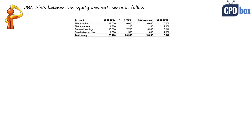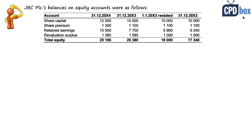Let's take a look at the example. JBC plc's balances on equity accounts are shown in a table with four different dates: year-end of 20x4, year-end of 20x3, 1 January 20x3, and year-end of 20x2. Note that year-end of 20x2 is just one day apart from 1 January 20x3, yet the balances on retained earnings are different. These accounts usually come from either a trial balance or the statement of financial position — they are not movements yet, just balances.